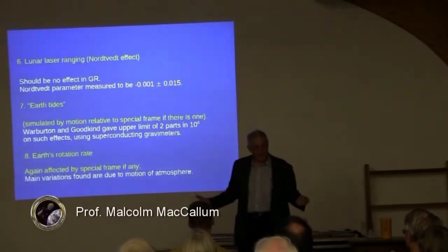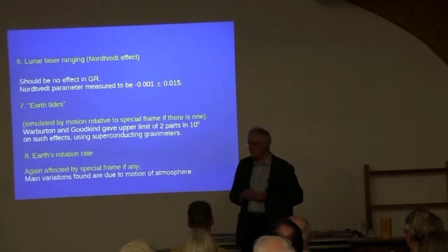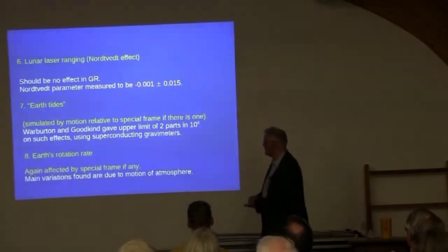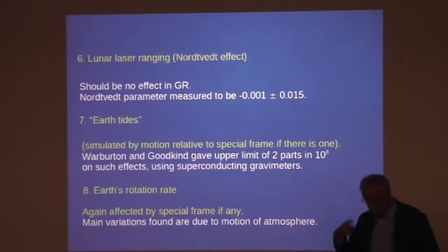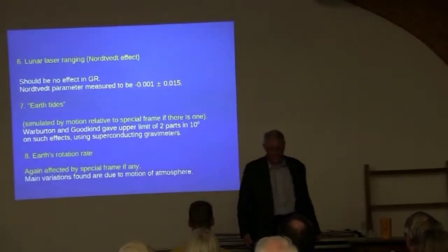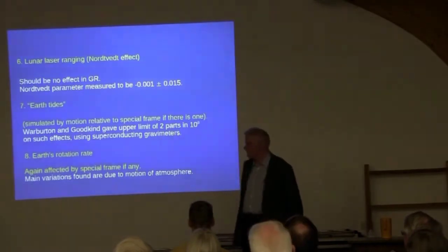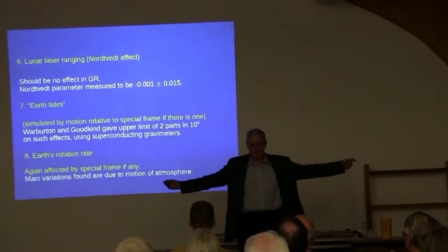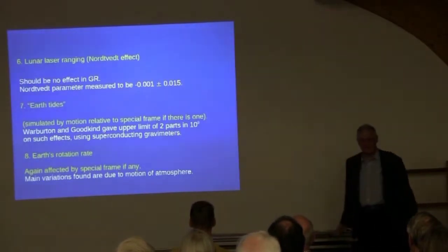We do know that there are tides of the fluid on the Earth — the oceans — and that loads the crust of the Earth differently as the day changes. What we don't know is how the crust responds to that varying load, and that could produce an effect at the same sort of level. So we can't do better than this because we don't know enough about how the Earth behaves. Similarly, there could be an effect if the Earth's motion relative to some special frame were involved in modified gravity, affecting the Earth's rotation rate slightly during the day. The big complication is the motion of the atmosphere — like the skater with arms out — if the winds are blowing one way the total angular momentum changes, and that affects the rotation rate.